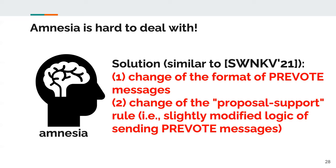In addressing amnesia attacks, we were inspired by the paper "BFT Protocol Forensics." We added two changes to the original Tendermint protocol: first, we changed the format of pre-vote messages by including one additional field; second, we slightly changed the rule that regulates whether a process supports a received proposal from the leader — in other words, the logic for deciding whether to send a pre-vote message. We are currently working on the formal write-up of the Accountable Tendermint Protocol, which we will post online soon.